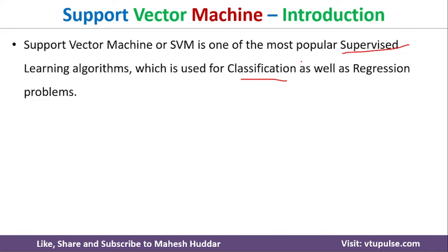For example, if you want to classify a mail as spam or not spam, we have only two possibilities — such problems are called classification problems. But if the target label contains continuous values, such problems are called regression problems. For example, predicting the increase in salary of an employee based on performance — the salary increase is continuous in nature.